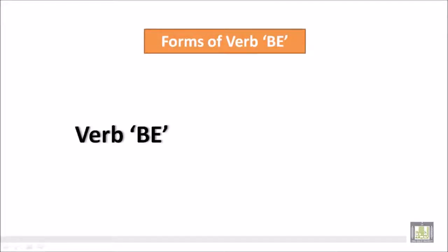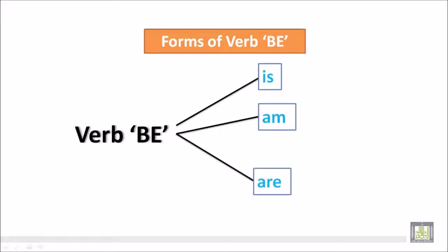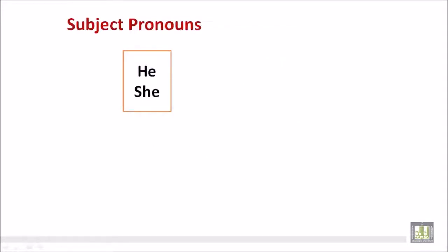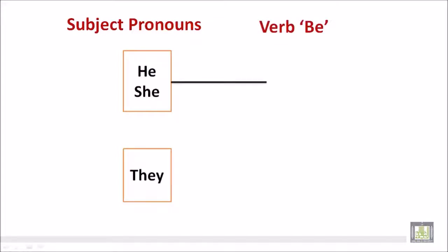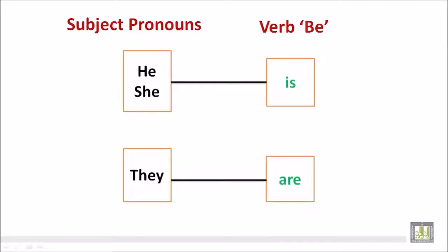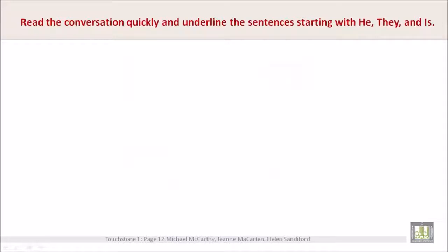Forms of the verb 'be' are: am, is, are. Subject pronouns such as he, she, and they correlate with the verb 'be' as follows: he or she — is; they — are. Please note: he or she is singular and they is plural. Read the conversation quickly and underline the sentences starting with he, they, and is.